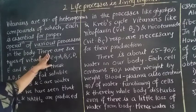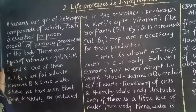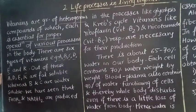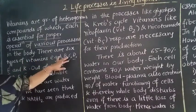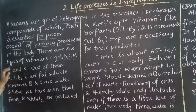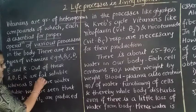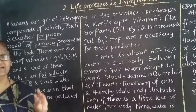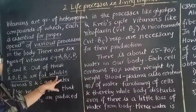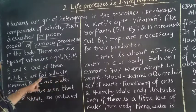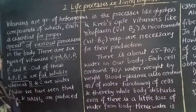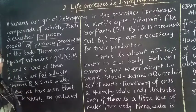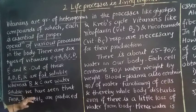There are six types of vitamins: A, B, C, D, E, and K. Out of these, vitamins A, D, E, and K are fat-soluble — that means they are soluble in fats. Then vitamins B and C are water-soluble, meaning they can dissolve in water.